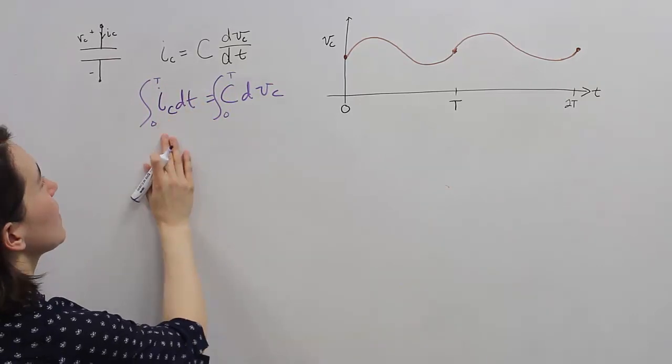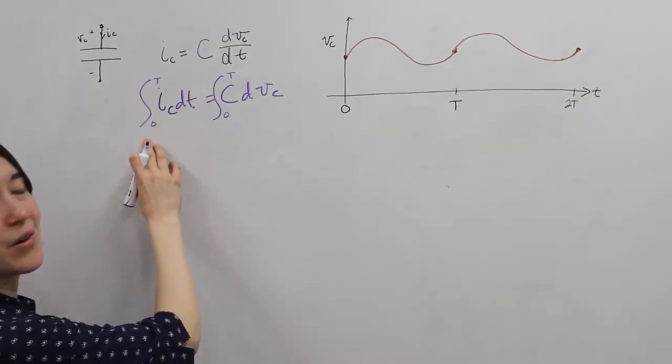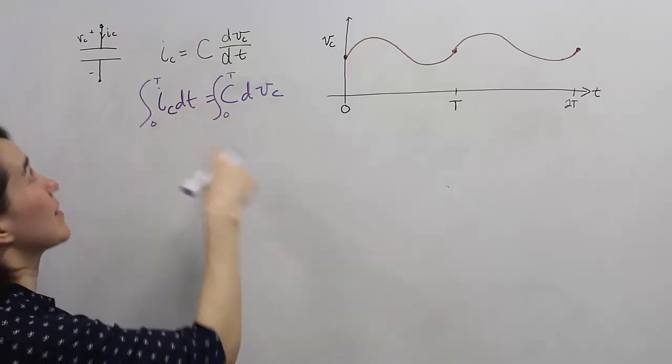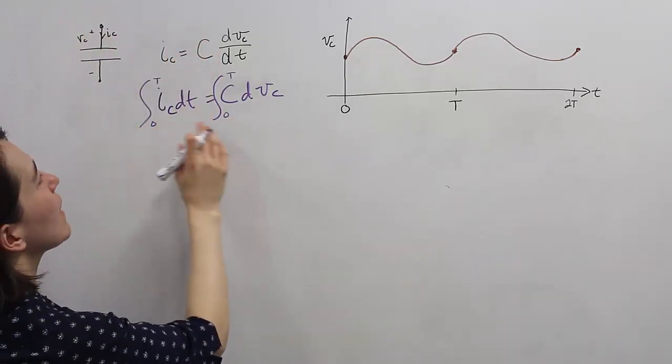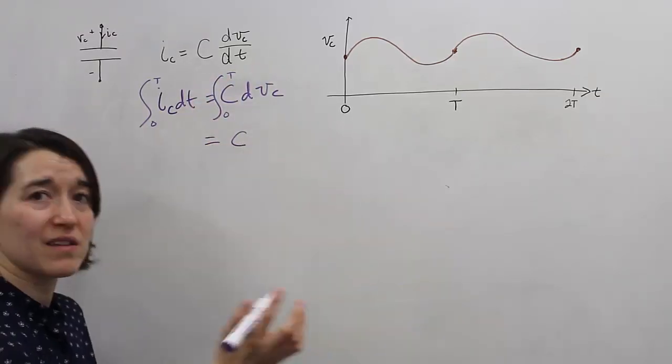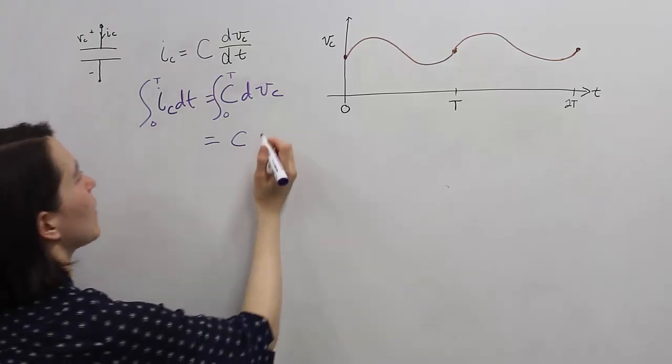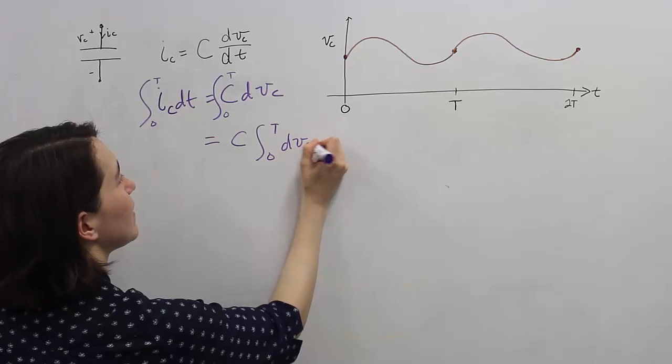Now, we can see here we have the same expression, the integral from the current into the capacitor, so into or out of the capacitor, over time. And then we have this thing. We can simplify this part. We can take the C out, because the C is going to be constant. And we're left with the integral from 0 to T of dv_c.